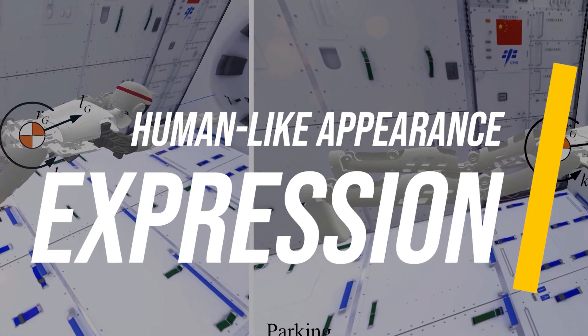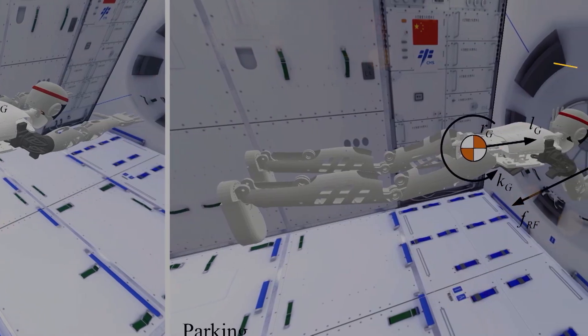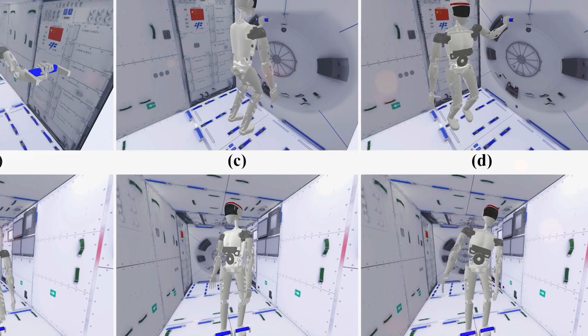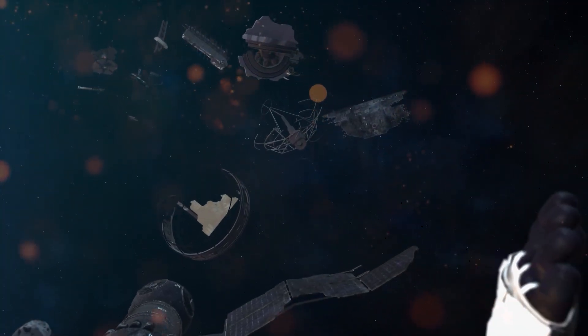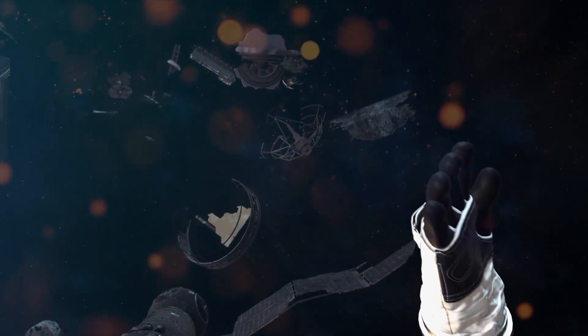Another feature of Taichobot is its human-like appearance and expression. Taichobot looks like a human. It can also make gestures and sounds to communicate with humans. Taichobot's human-like appearance and expression are designed to make it more friendly and acceptable to humans.